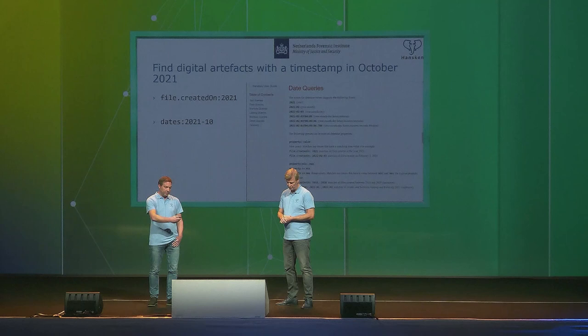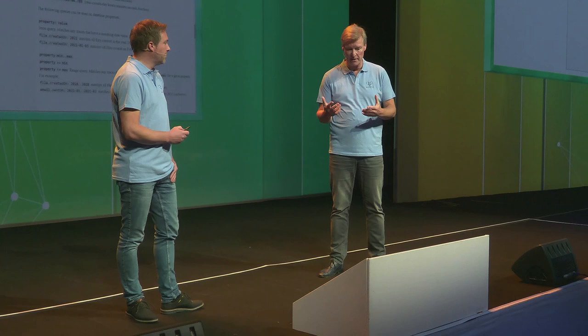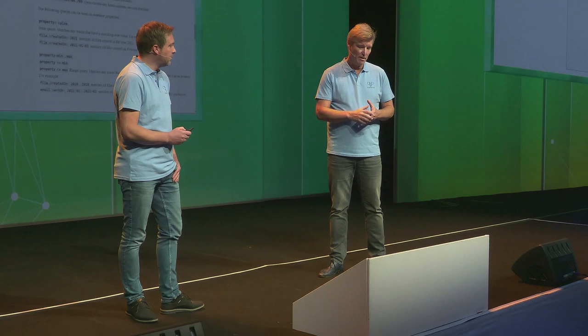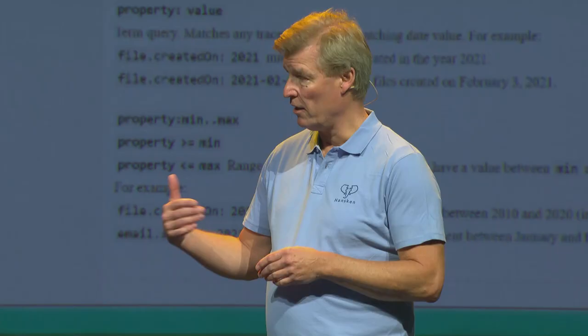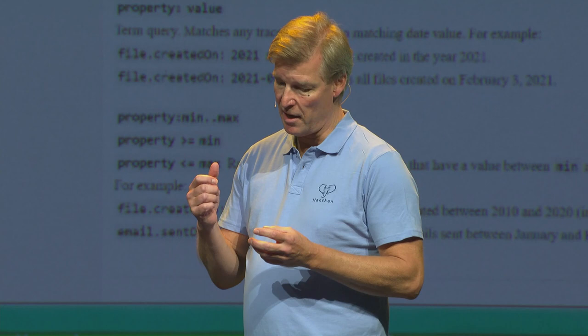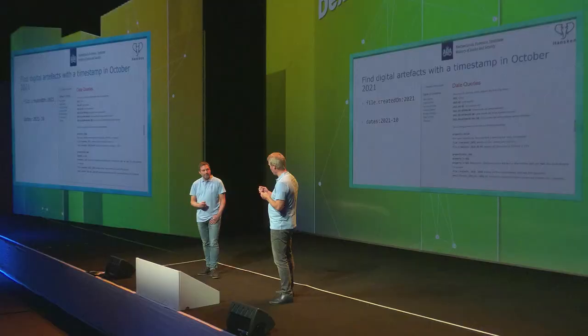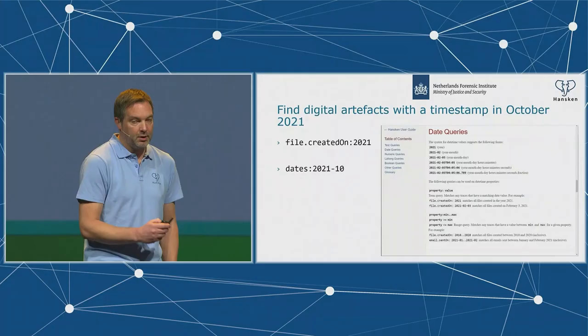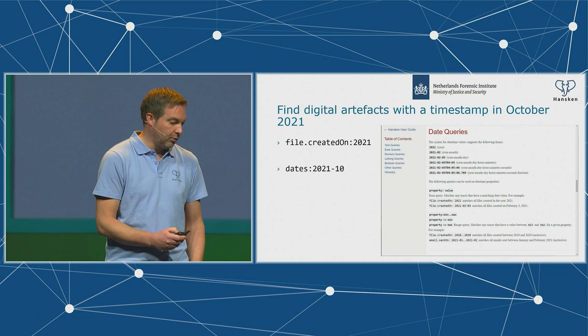You can say: give me everything that happened in October 2021 — a very simple query. That date filter is great because you don't have to care about what type of date you mean — modified, created, or sent. Hansken has an autocomplete feature in the expert user interface: if you start typing, for example, 'file.created', Hansken prompts you with all different possibilities. It's a great reminder of the syntax, and if it doesn't match, it means you made a mistake or Hansken found no matching traces. This autocomplete is also per-case.